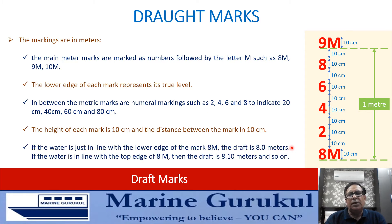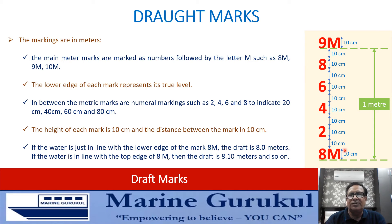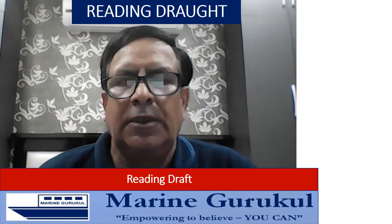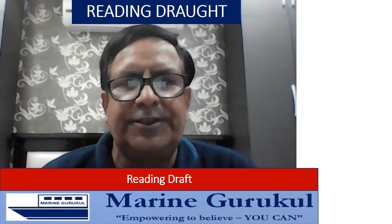If the water is in line with the lower edge of the 8-meter mark, the draft is 8.0 meters. If the water is in line with the top edge of the 8-meter mark, it would be 8 meters plus 10 centimeters, making the draft 8.1 meters. This is how the draft of the ship is read. Let us practice reading drafts by taking a few examples.